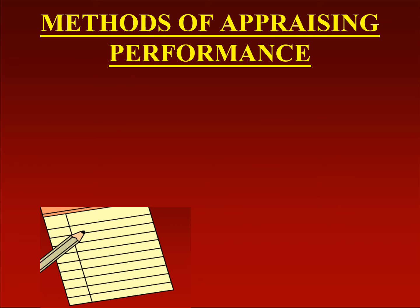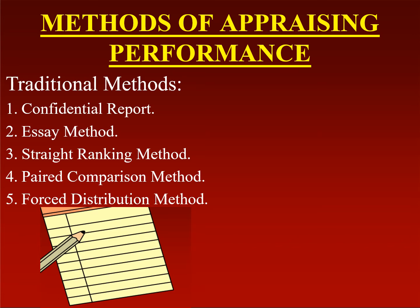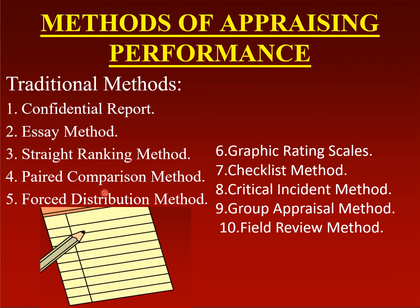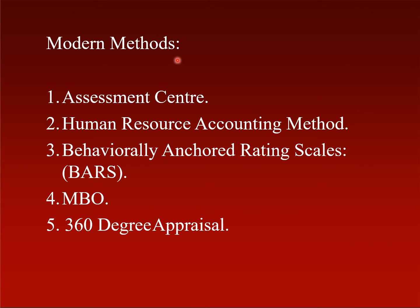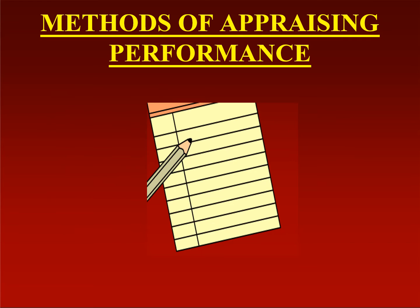Now we will see different methods or techniques of appraising performance. The techniques fall under two categories: traditional methods and modern methods. Traditional methods include: confidential report, essay method, straight ranking method, paired comparison method, forced distribution method, graphic rating scale, checklist method, critical incident method, group appraisal method, and field review method. Modern methods include: assessment center, human resource accounting method, behaviorally anchored rating scales, management by objectives (MBO), and 360-degree evaluation system.